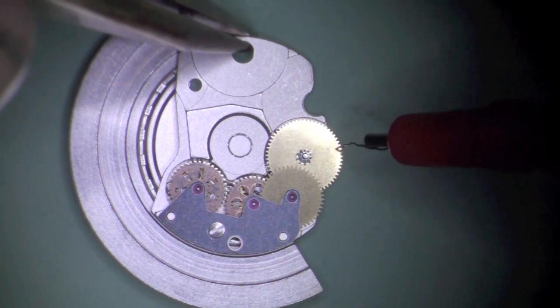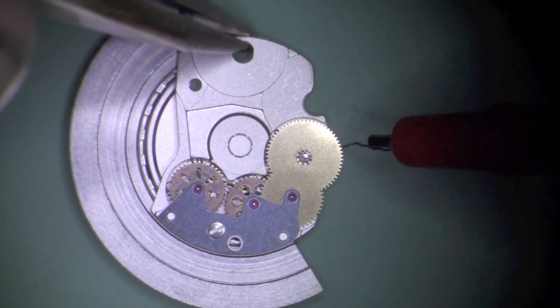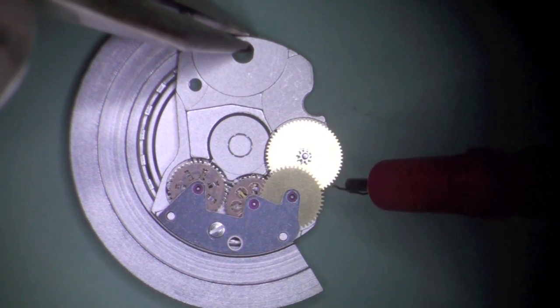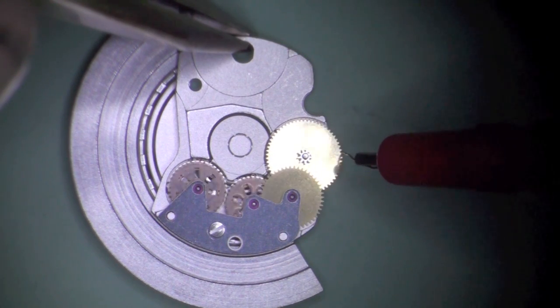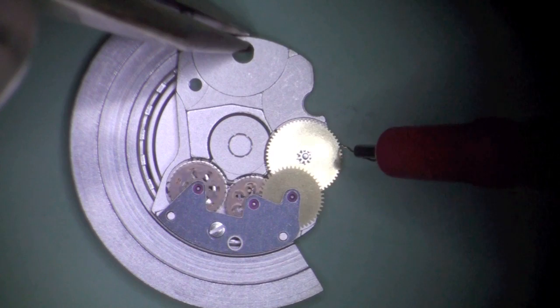When applying pressure to the ratchet driving wheel in the winding direction, both reversers slip without significant resistance. This check must be performed with the oscillating pinion installed so that both reversers are forced to slip.